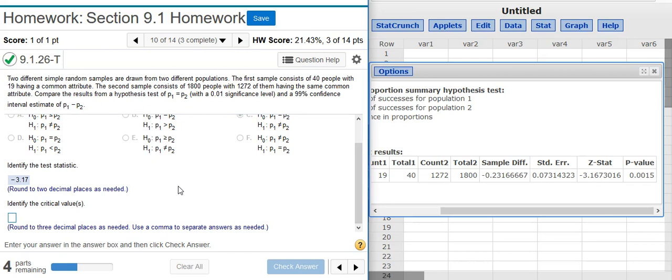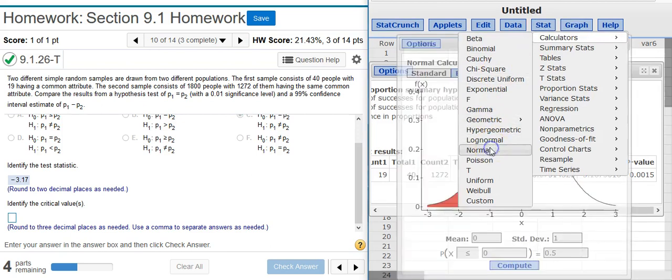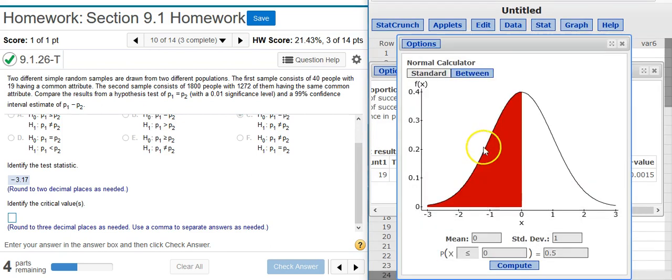The next part asks to identify the critical values. The critical values are going to come from the distribution that we're using. And because we're dealing with proportions, and we have a z-score for our test statistic, we're going to need to use the standard normal distribution, because z-scores come from the standard normal distribution. So back here in StatCrunch, I go to Stat, Calculators, Normal.